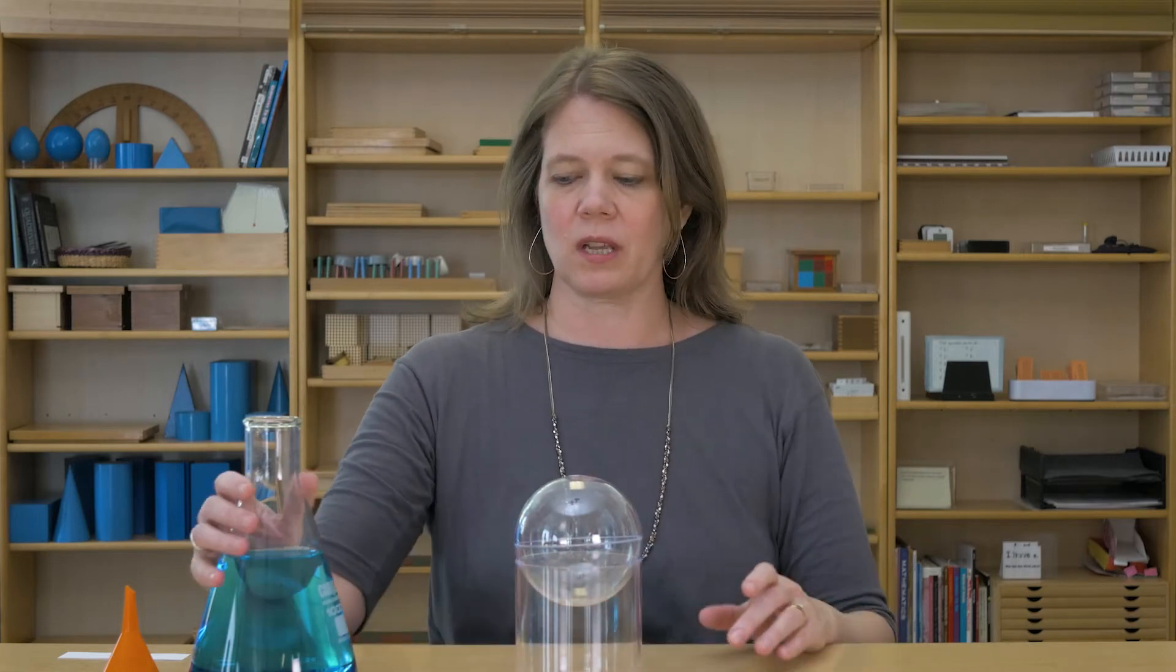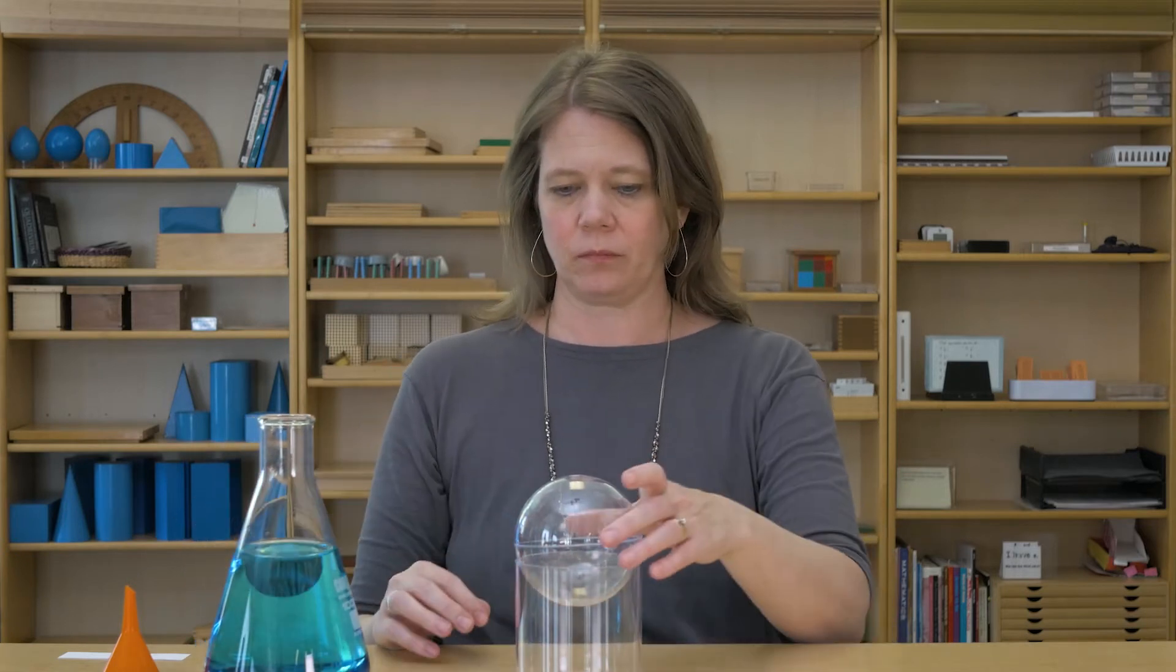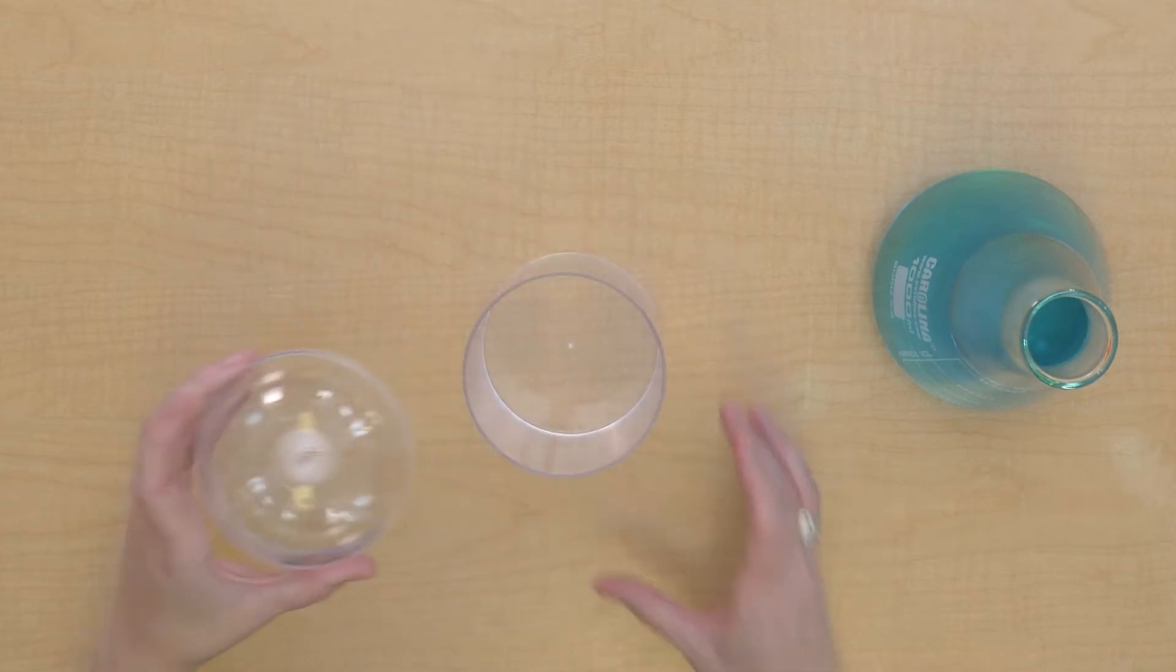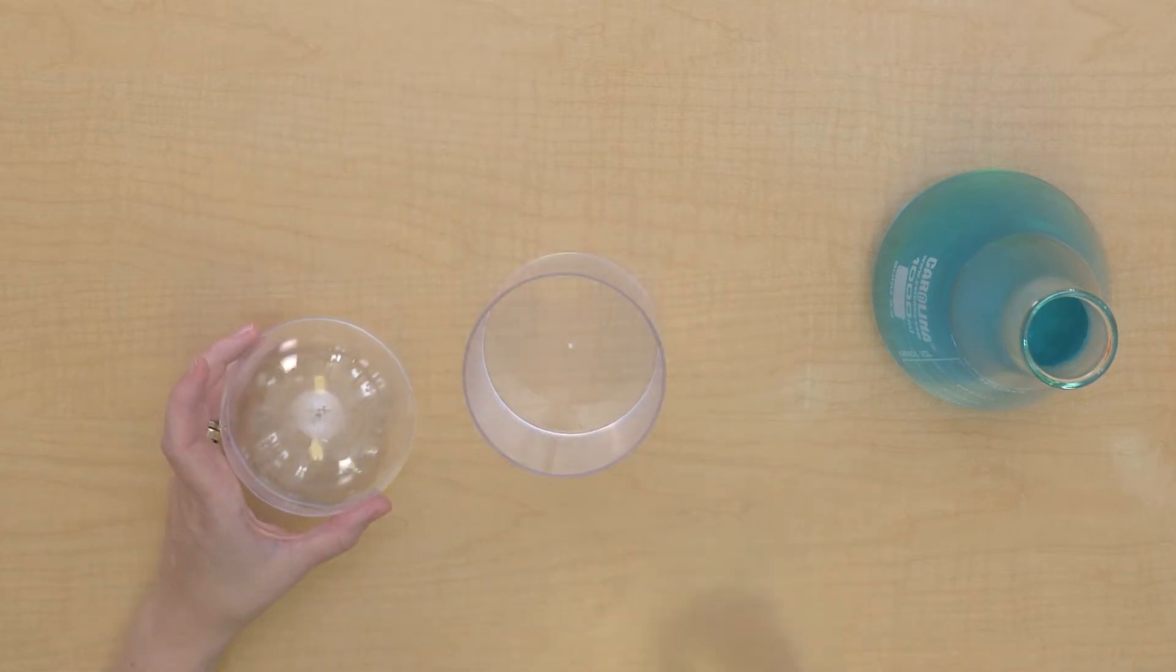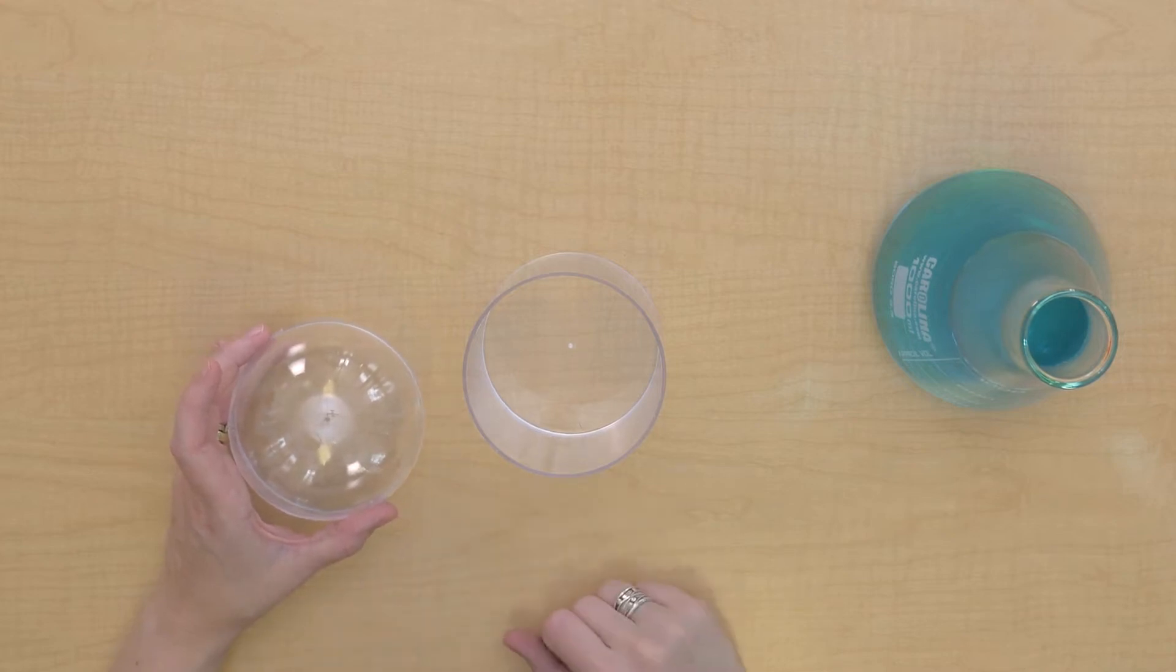So, we're going to use the cylinder to help us find the volume of the sphere, much like Archimedes did. So let's see what the relationship is.